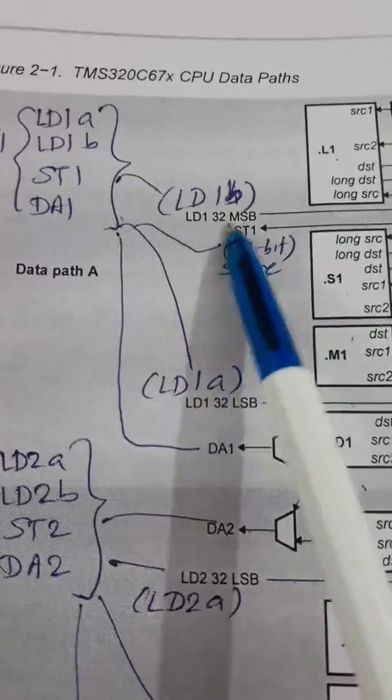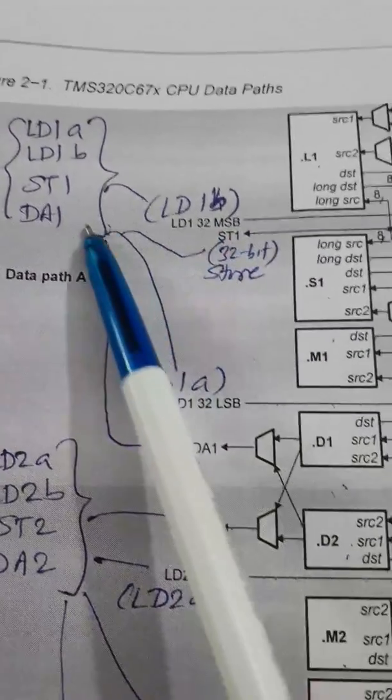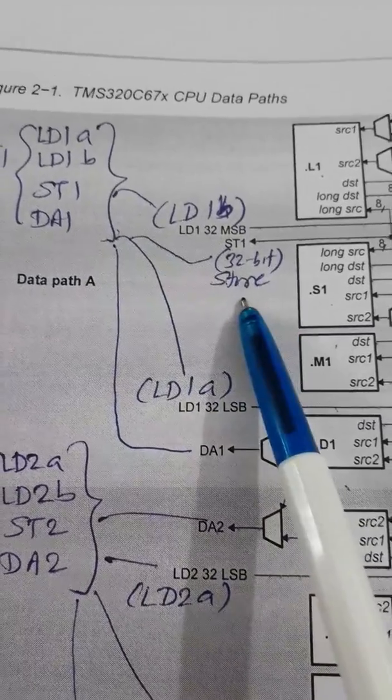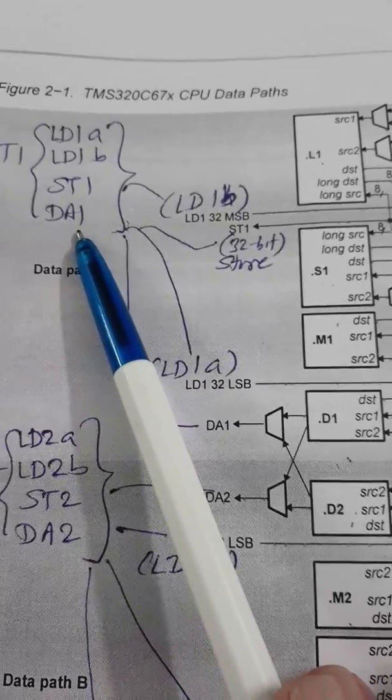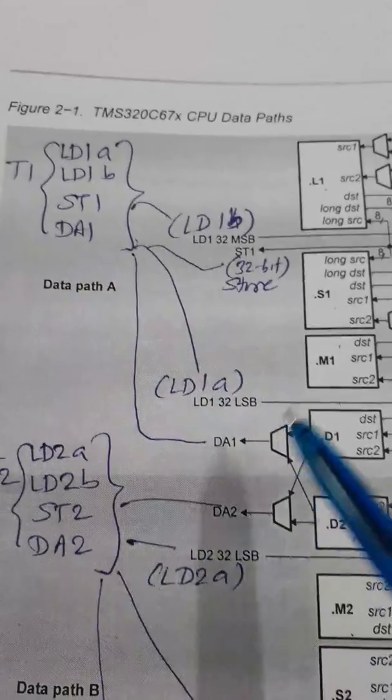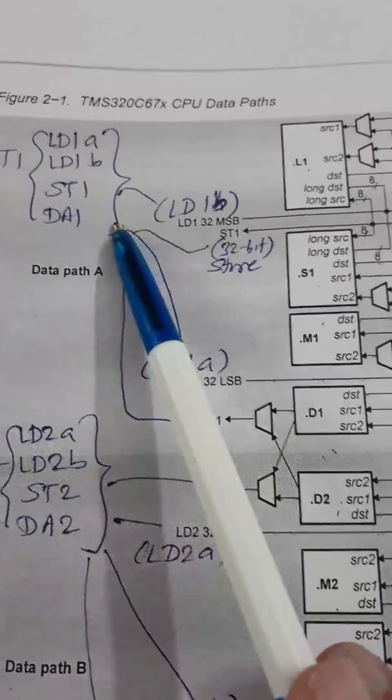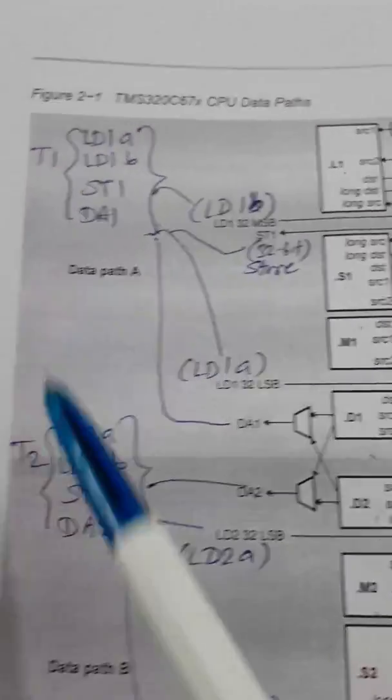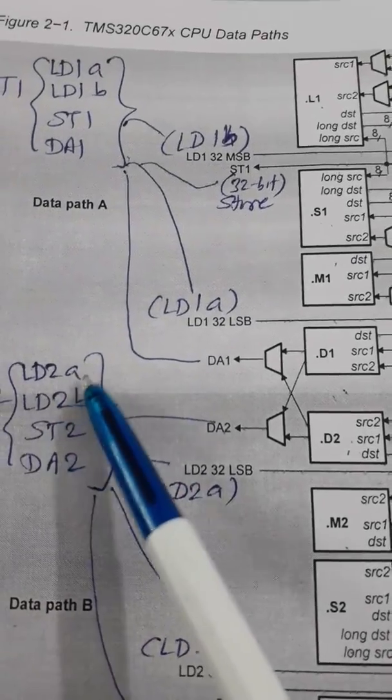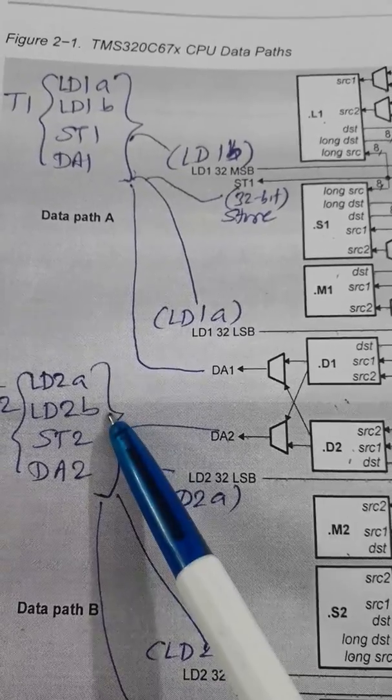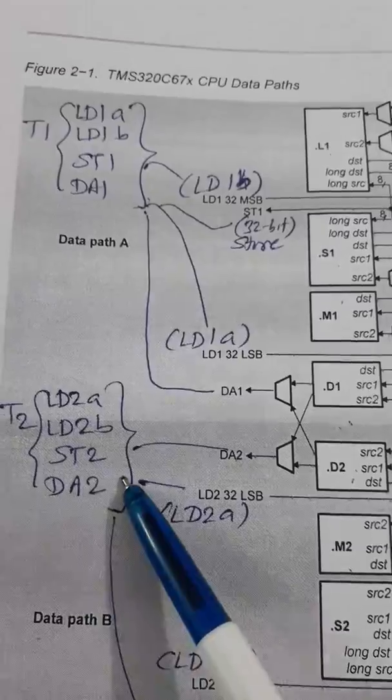And for the output or for storing into the memory from the register, you have ST1, that is of 32 bit store. And that is from the address DA1 or DA2, any one of the addresses can be used depending upon the instruction. So this is T1. Same way here, T2 is also identical to that. So LD2A, LD2B, both of 32 bits. Similarly, store 2 for 32 bits and address.